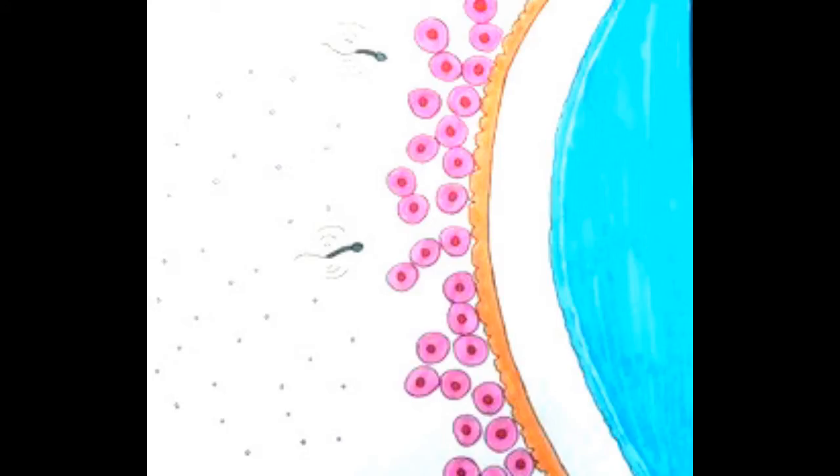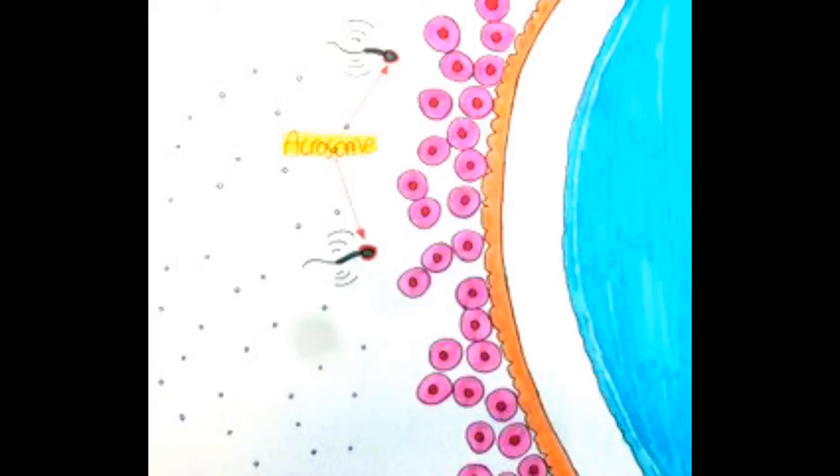Now, the beating cilia in the fallopian tube aid the egg towards the uterus. This counteracts the sperm's direction, just like a sprinter having to run against the wind. So what happens is chemicals released in the reproductive tract and uterus wall cause a membrane surrounding the sperm head and acrosome to break down and change, causing the sperm to be fluid-resistant.